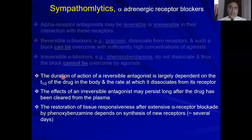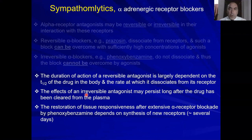Regarding duration of action: the duration of action of reversible antagonists depends on the half-life and the rate at which the drug dissociates from the receptor. However, the duration of action of irreversible antagonists is very prolonged — the drug may be cleared from plasma within four to six hours, but the effect continues because the drug is still bound to the receptor. To regain receptor activity, the body has to synthesize new receptors.